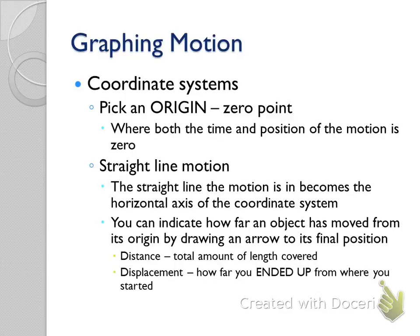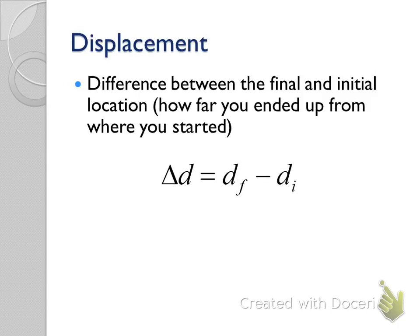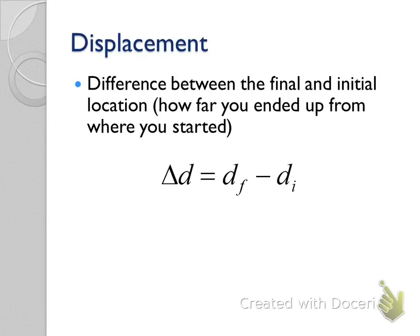The equation for displacement uses a lowercase d. We use delta displacement — delta means 'change in,' which is final minus initial. The book uses d-sub-f for displacement final and d-sub-i for displacement initial. Your initial displacement should almost always be zero since we get to pick the origin and put it at the start of motion. That initial displacement is almost always zero, so we're essentially not doing a real change — it's something minus zero.